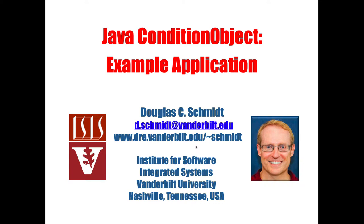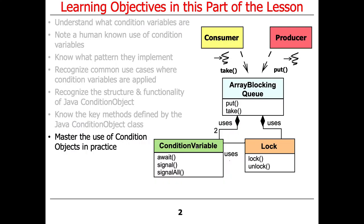Now that you've learned about condition object structure and functionality, you know the key methods — really just three that matter: await, signal, and signal all. Let's show how this stuff is actually used in practice.